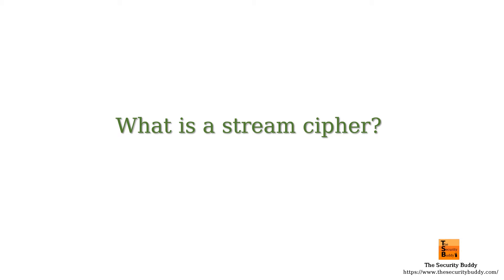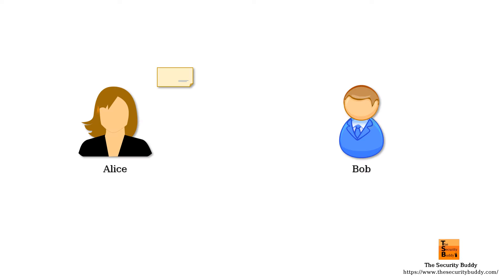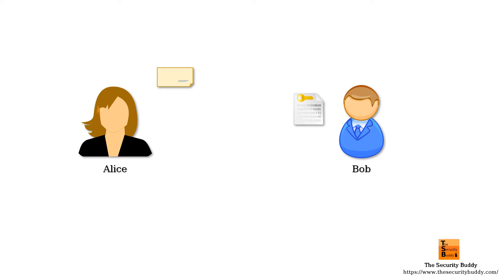What is a stream cipher? In this video we will try to understand that. We know that if a sender wants to send a sensitive message to a recipient so that no third party can read it, then encryption is a solution.